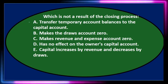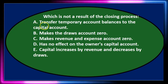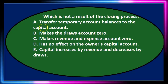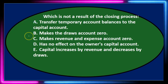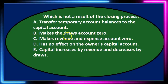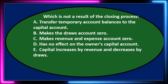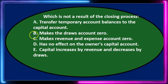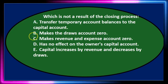A says transfer temporary account balances to the capital account. That's what the closing process does — we transfer those temporary accounts, those income statement accounts and draws accounts to the capital account. So it's not that one. B says makes the draws account zero. The draws account is a temporary account, and therefore it will be closed out to the capital account as well. So it's not that one either.